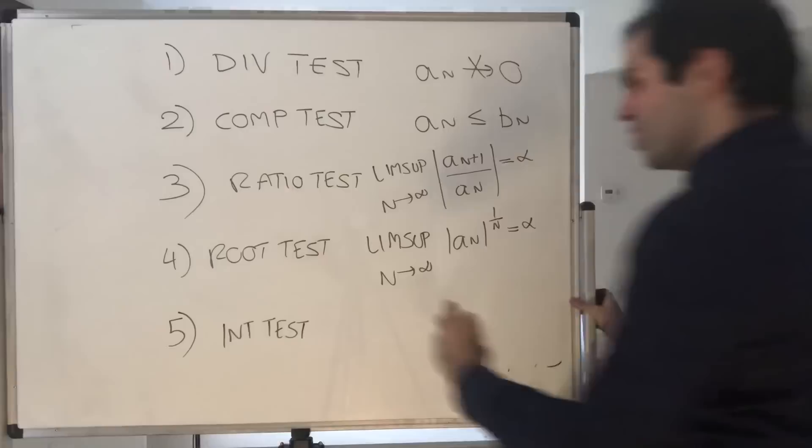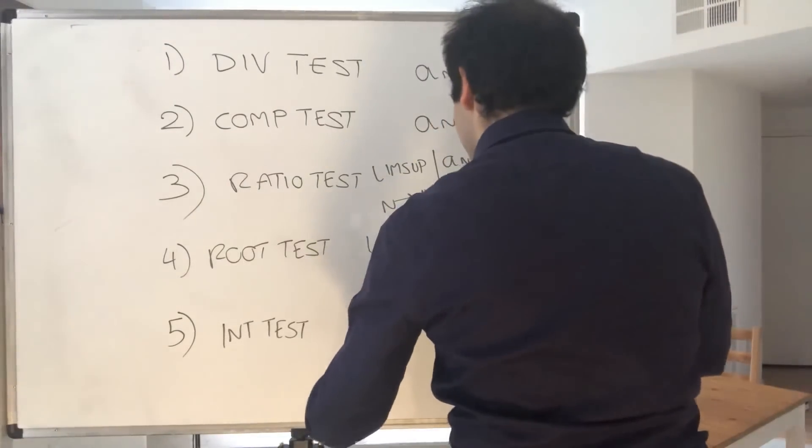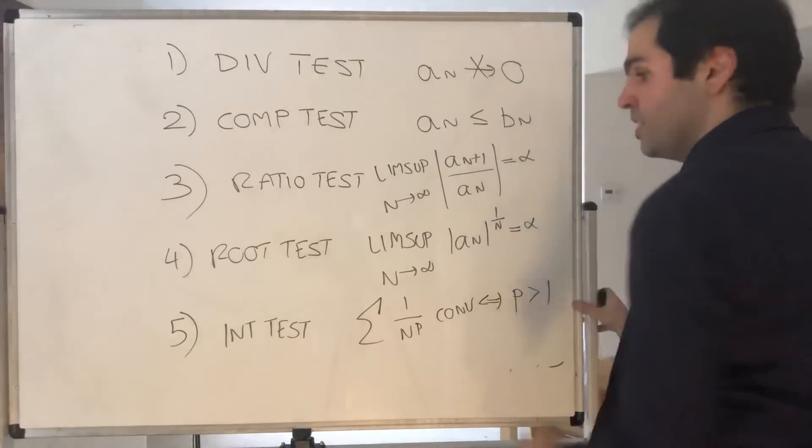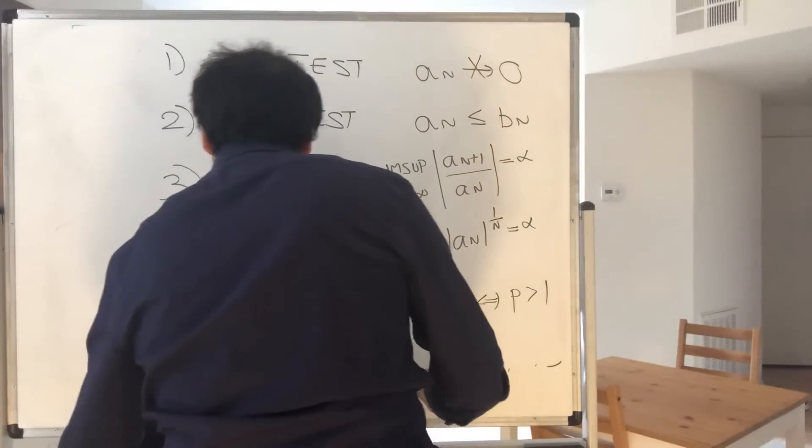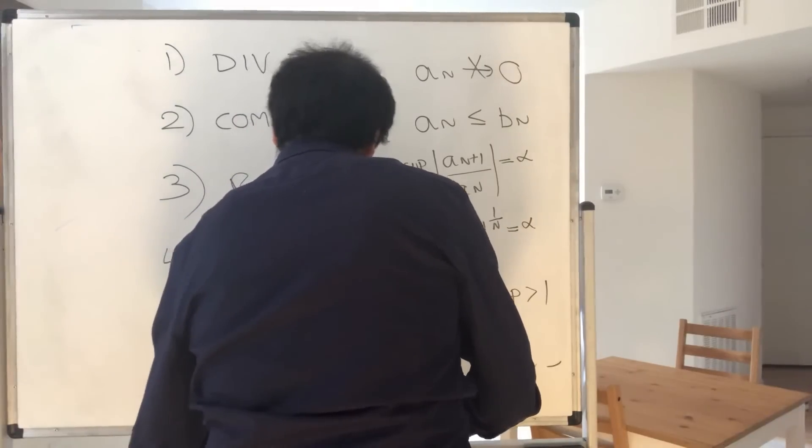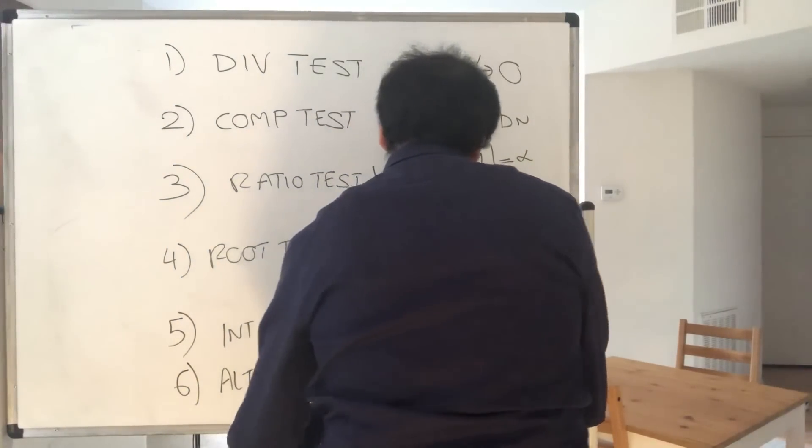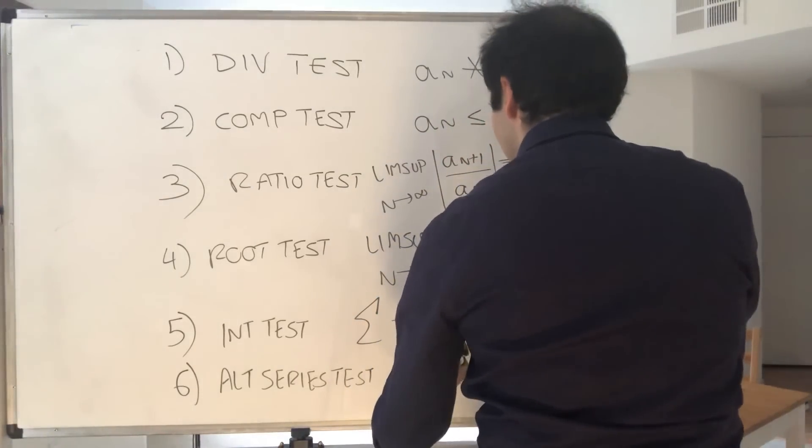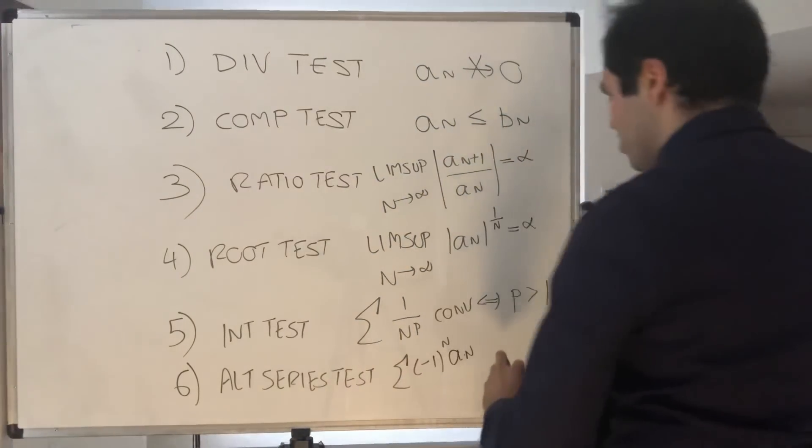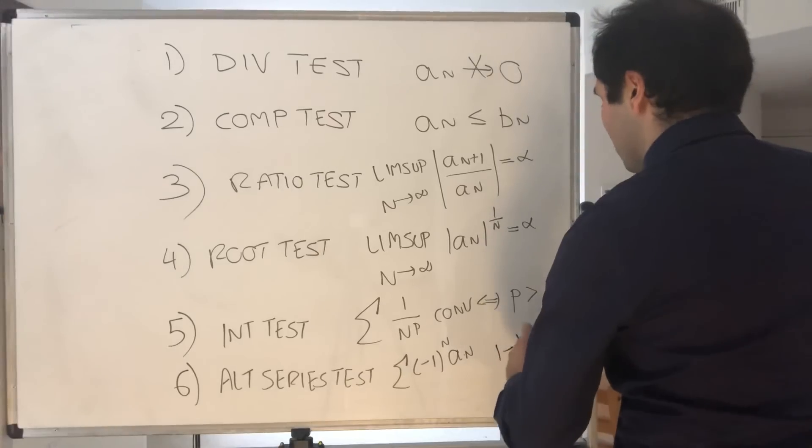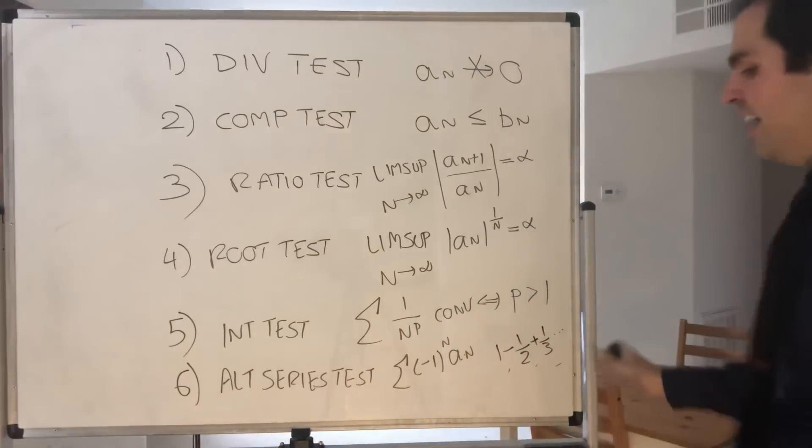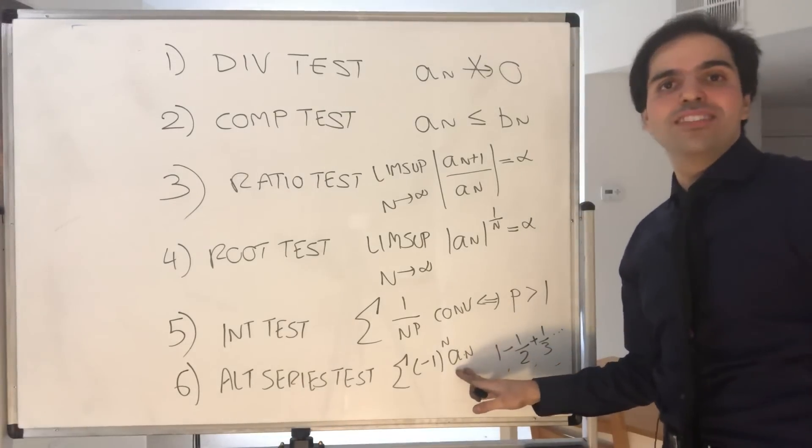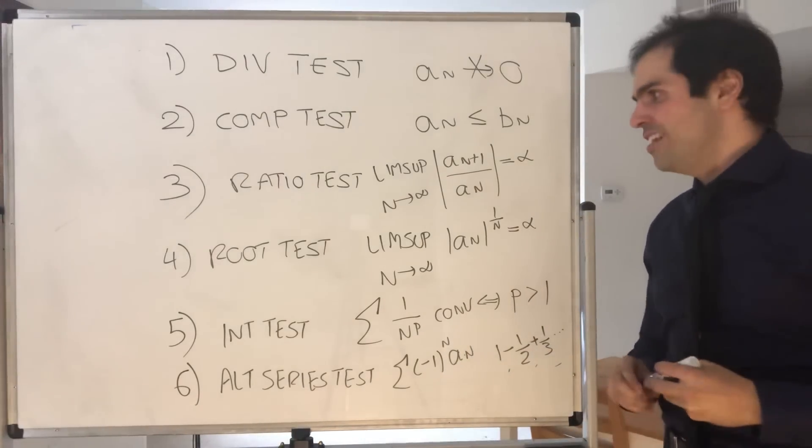And then, there's also the integral test, which has this amazing consequence that the p-series converges if and only if p is greater than 1. And last but not least, the alternating series test, which has to do with alternating series. So, series of the form (-1)^n times a_n. So, for instance, 1 - 1/2 + 1/3, et cetera. And the nice thing is, this always converges provided a_n is decreasing and goes to zero. A very easy test.